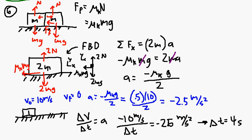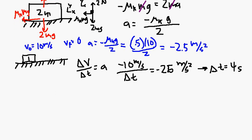Okay, so how far do we go in those 4 seconds? You can do this a number of ways. I'm just going to say delta X equals V naught times delta T plus 1 half A delta T squared.